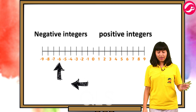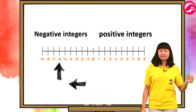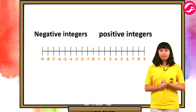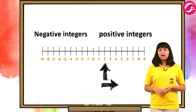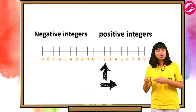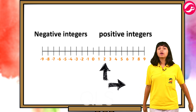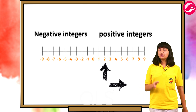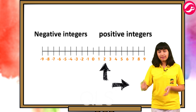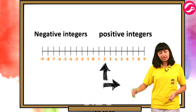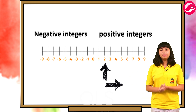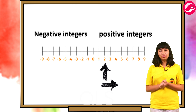Minus six ko represent karna hai toh because it has a minus sign, mein zero se six steps left mein jahungi. In order to mark plus two on a number line, we move two points to the right of zero. Plus two represent karna hai toh mein zero se do steps right ki taraf jahungi, woh positive ho jayega.